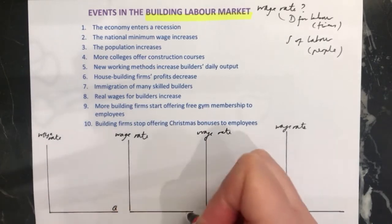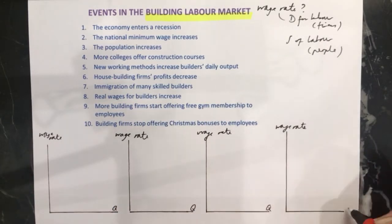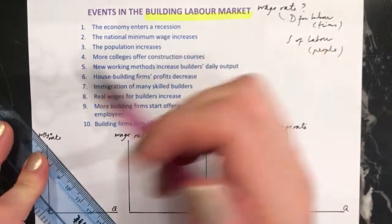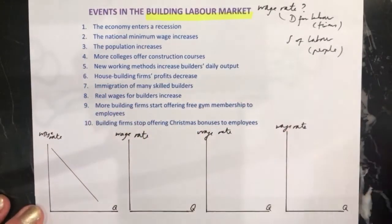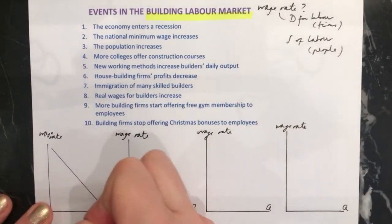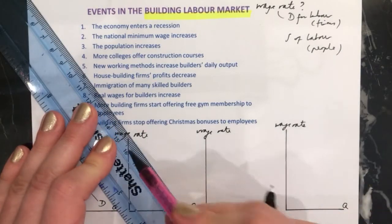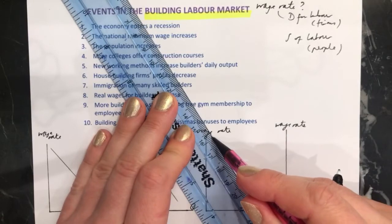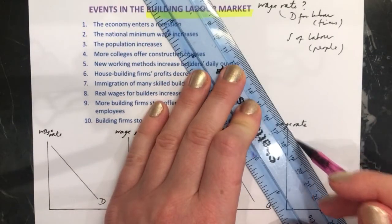Quantity goes on the x-axis for all of them. In each situation we're going to have the demand for labour — remember demand goes down — so demand for labour in every single diagram. And then in every diagram we'll also have the supply of labour.